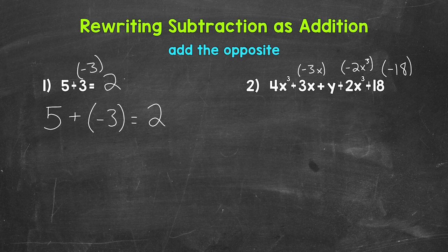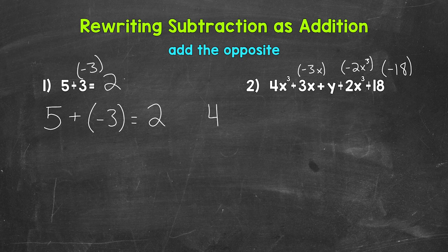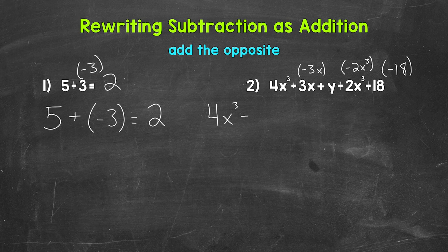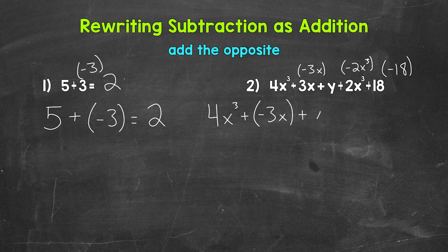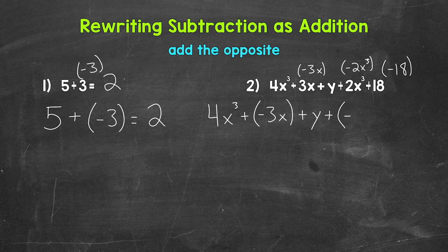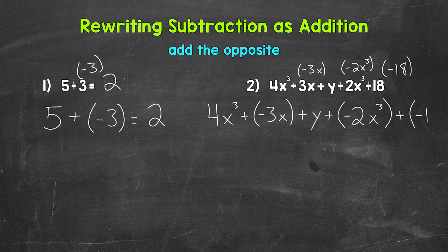Let's put that all together and rewrite this algebraic expression with those changes. So we have 4x cubed plus negative 3x plus y plus negative 2x cubed plus negative 18.